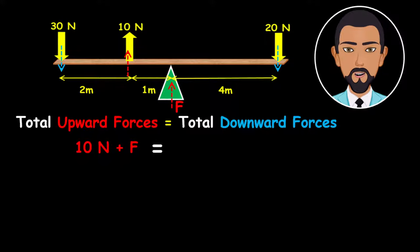And all of this is equal to the total downward forces, which include the 30 newton force and the 20 newton force. Therefore, we can say 10 newton force plus F equals 30 newton force plus 20 newtons.